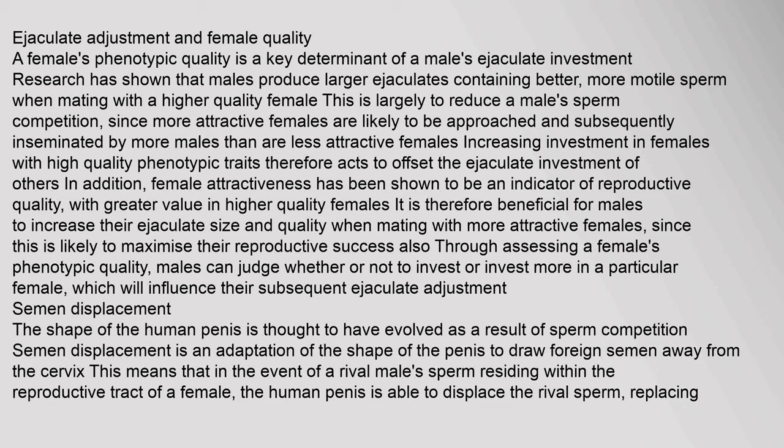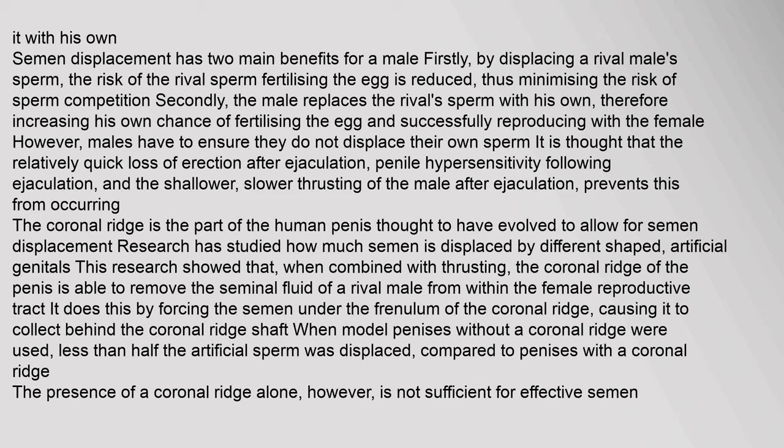The shape of the human penis is thought to have evolved as a result of sperm competition — specifically as an adaptation to draw foreign semen away from the cervix. In the event of a rival male's sperm residing within the reproductive tract of a female, the human penis is able to displace the rival sperm, replacing it with his own. Semen displacement has two main benefits: it reduces the risk of rival sperm fertilizing the egg, and it replaces the rival's sperm with the male's own, increasing his chance of successful reproduction.